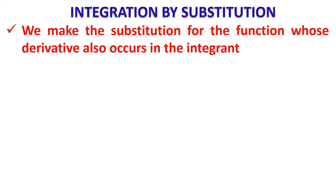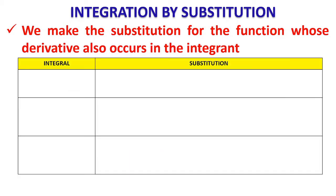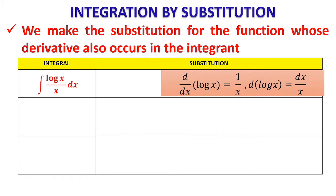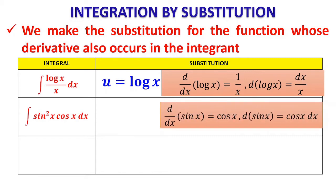The technique is to identify the function whose derivative also occurs inside the integrand. For example, if you have ∫(log x / x)dx, we can see that the derivative of log x is inside the integrand. Therefore we take u = log x. Similarly, for ∫sin²x · cos x dx, the differentiation of sin x is cos x, and the differentiation of cos x is −sin x, but the differentiation of sin x is directly available inside the integrand.